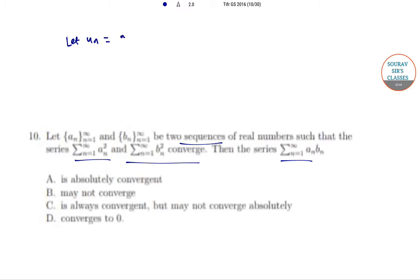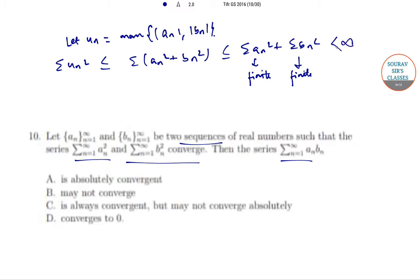Now let u_n equal maximum of mod a_n comma b_n. Then summation u_n squared is less than or equal to summation a_n squared plus b_n squared. And since this is finite and this is also finite, since both are convergent, so this is less than infinity. Therefore summation u_n squared is convergent.